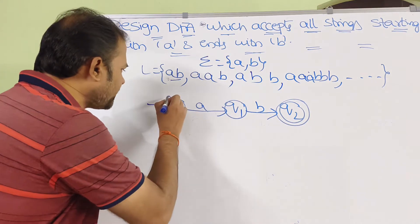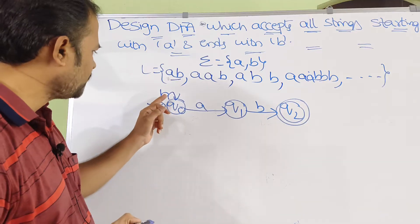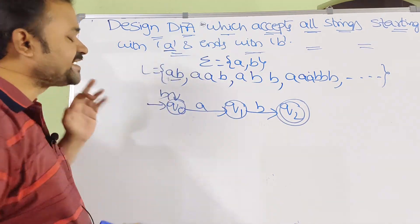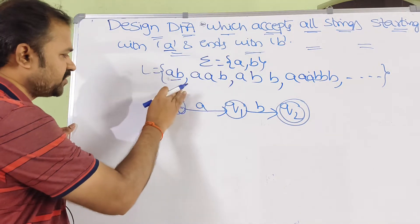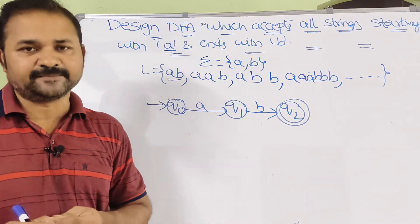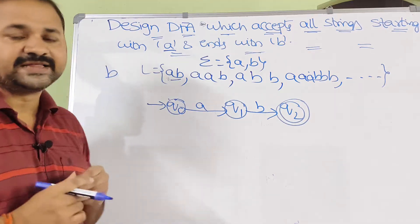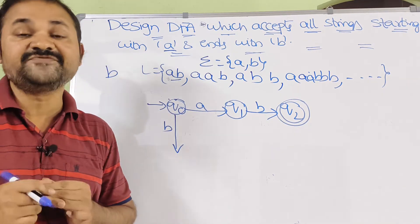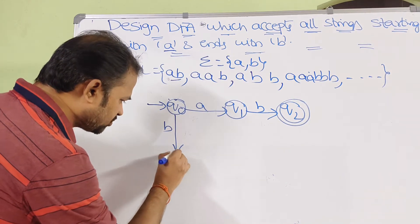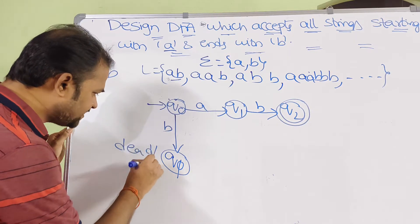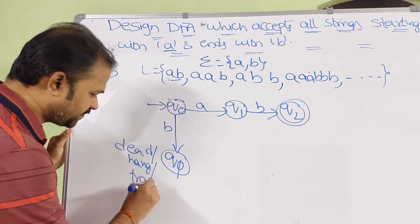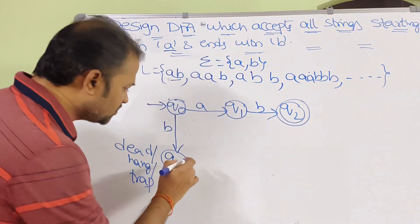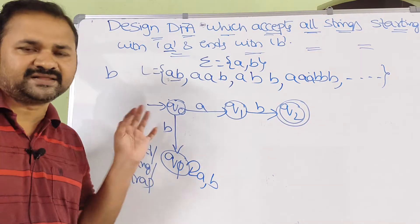Can we apply a self-loop on Q0 with input symbol B? No, it's not possible. Every string must start with A, so if a string starts with B it is invalid. We go to Q_pi, which is called the dead state, hang state, or trap state. From the dead state there is no transition to other states — applying any A's or B's keeps us at Q_pi.